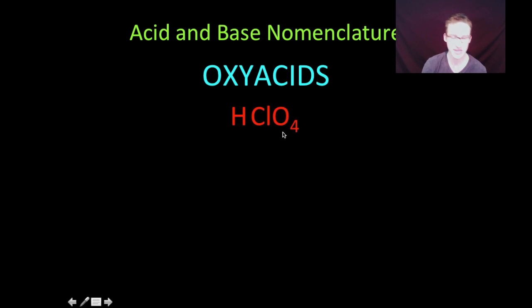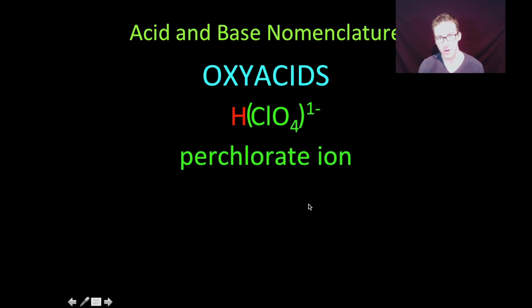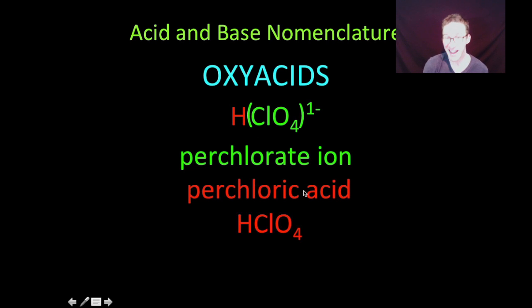One more time. HClO4. This is known as the perchlorate ion. We can identify this is the perchlorate ion within this acid molecule. Boom, perchlorate. And so adichitis indicates this would become perchloric acid.